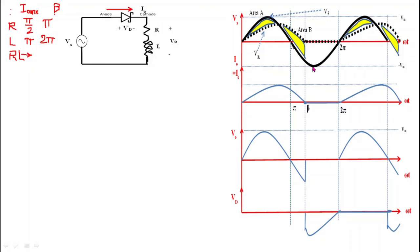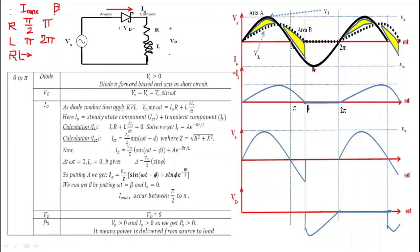From zero to π, the positive half cycle of supply voltage is applied to this diode. When this positive half cycle is applied, the anode of this diode receives positive potential. On receiving positive potential, the diode gets forward biased and acts as a short circuit. When the diode is short-circuited, the supply voltage appears across the load, so V₀ equals Vs, which equals Vm sin(ωt), from zero to π.